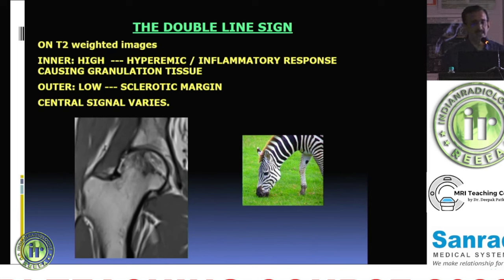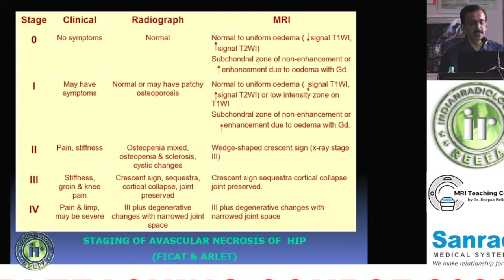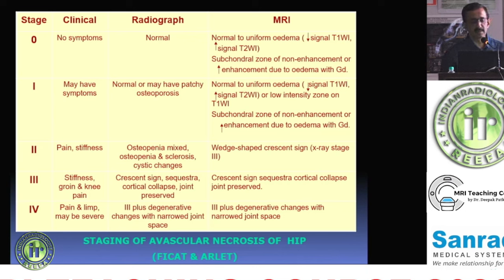The central signal of the osteonecrotic focus is not included in the double line sign — it varies according to the Mitchell staging. First the marrow remains normal (bright on T1 and T2), then it is replaced by hemorrhage, then by reparative tissue, and ultimately by fibrous tissue. The most famous staging system is the ARCO staging (with a 2019 revision), and there is also the Mitchell staging among others.